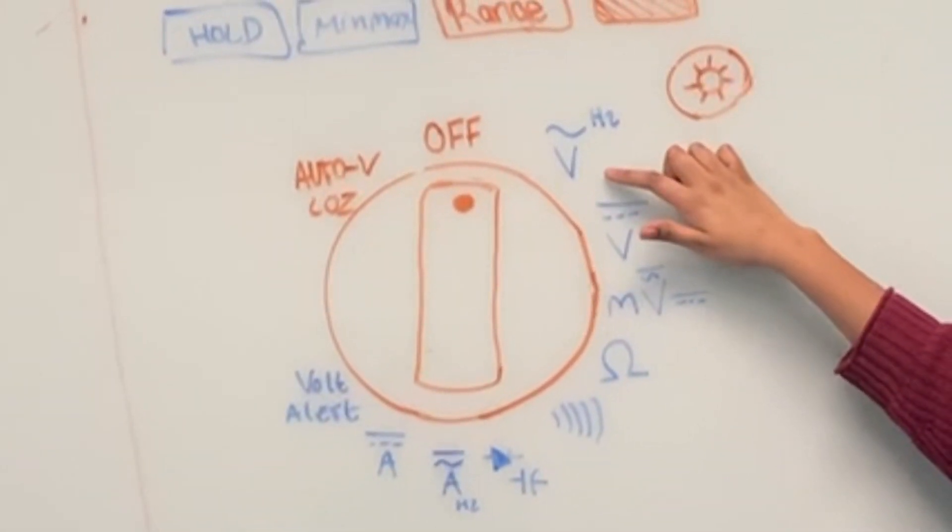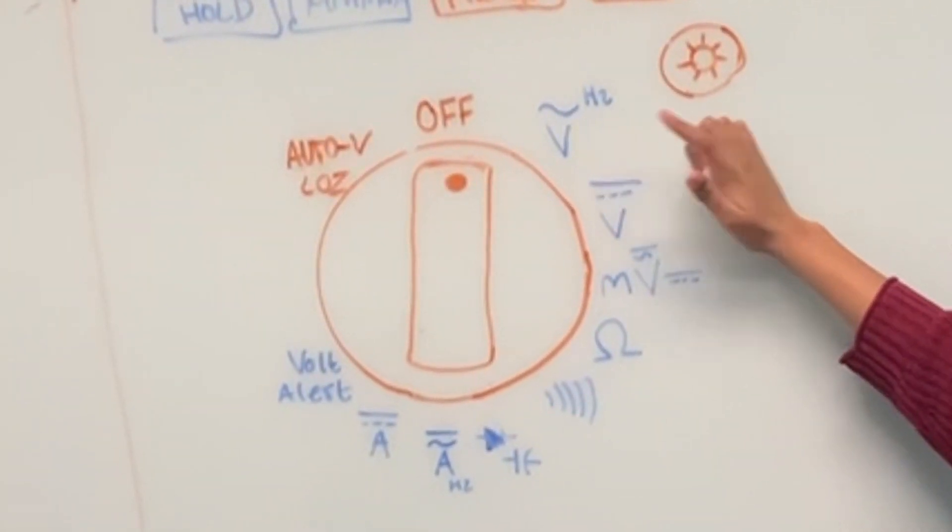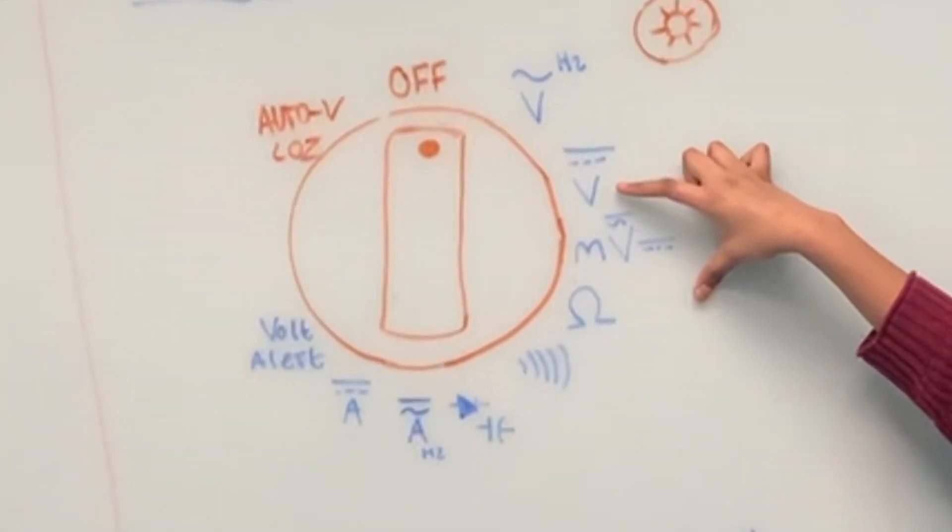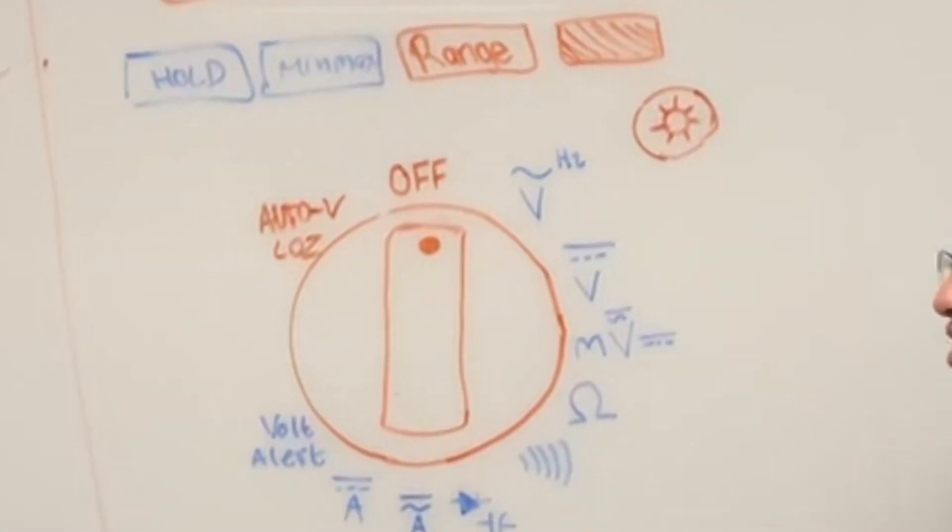This button is to measure alternating voltage, and this button is to determine direct voltage.